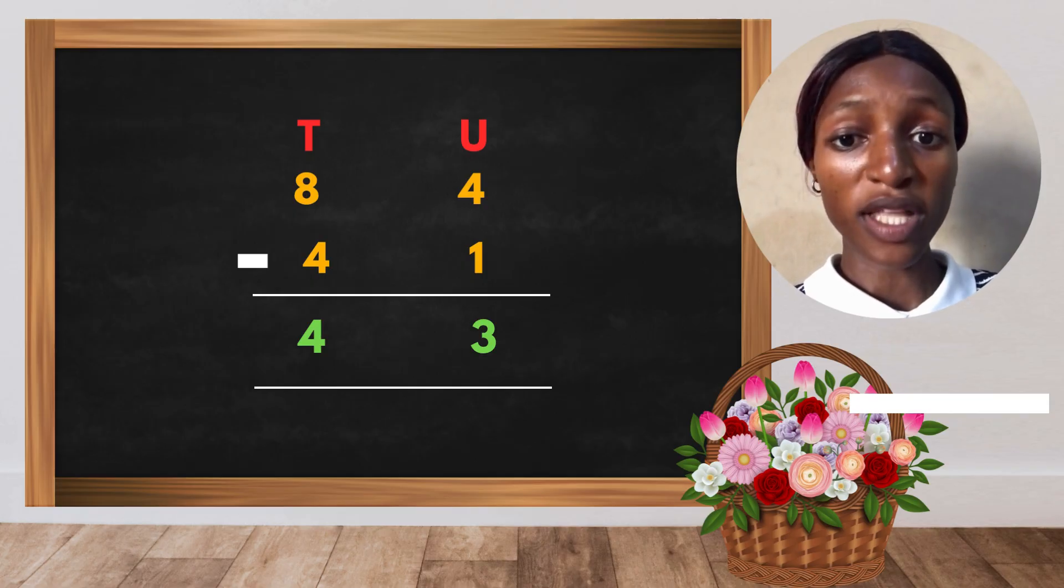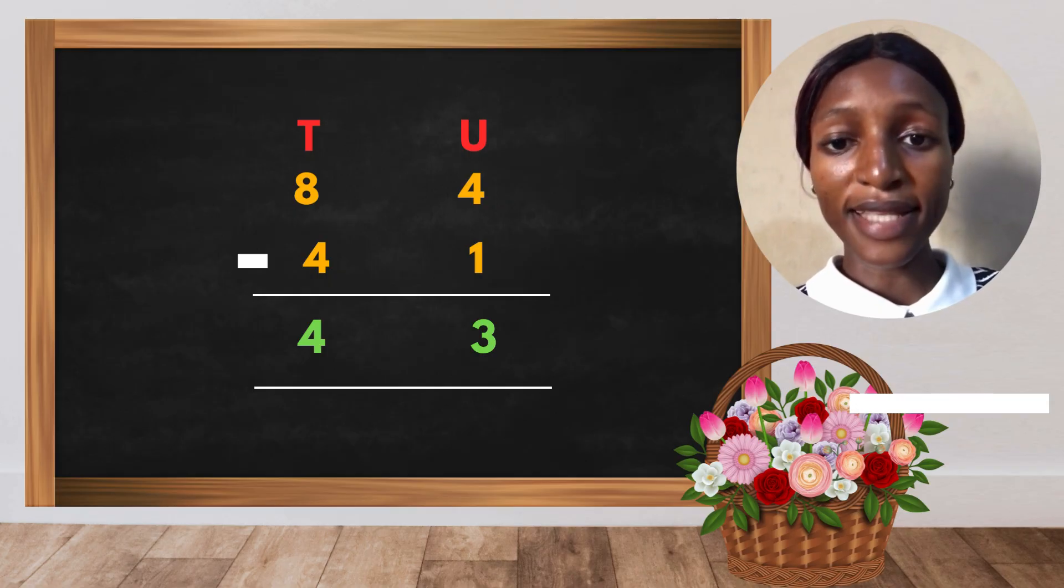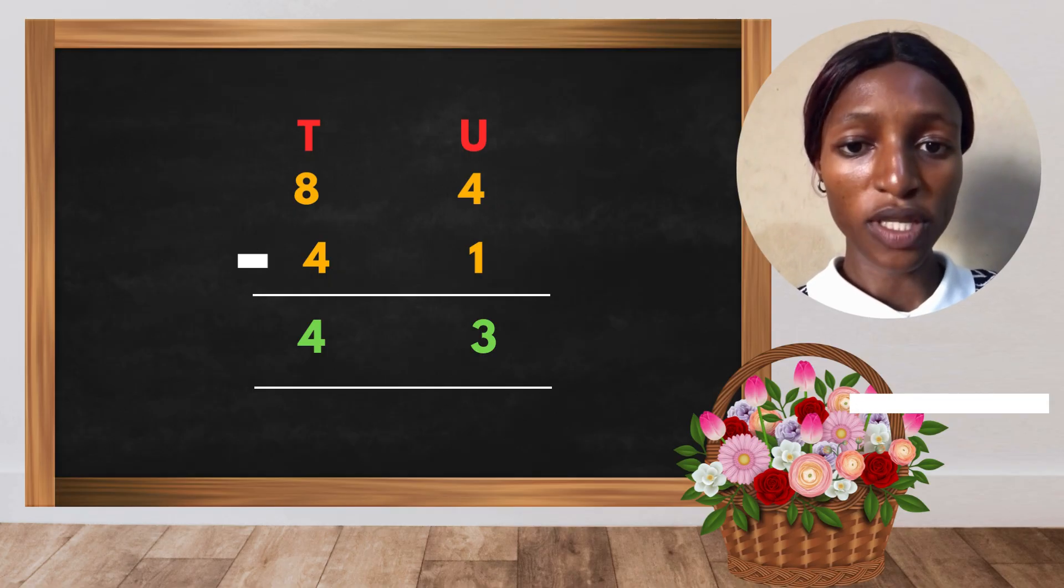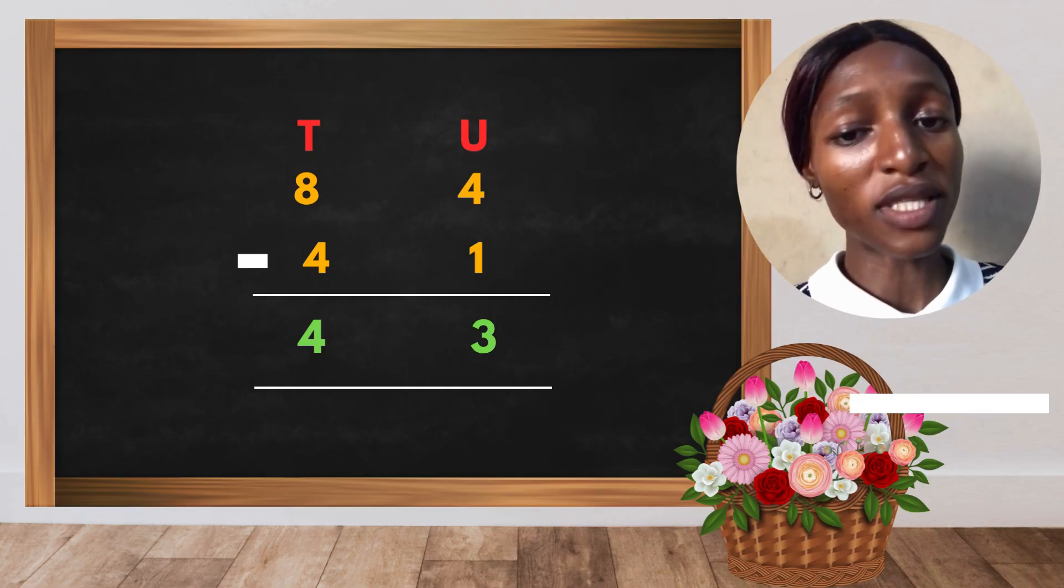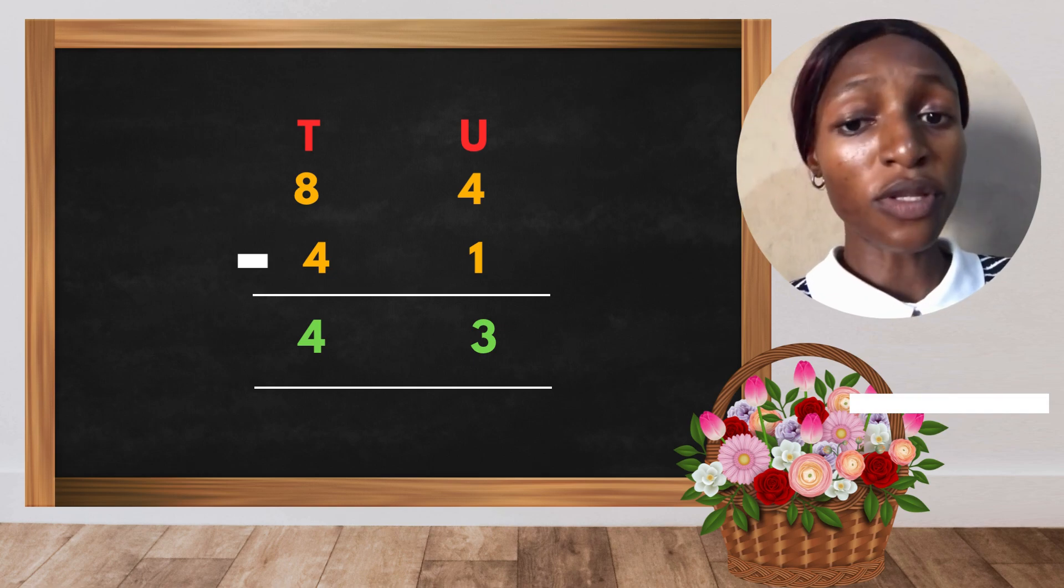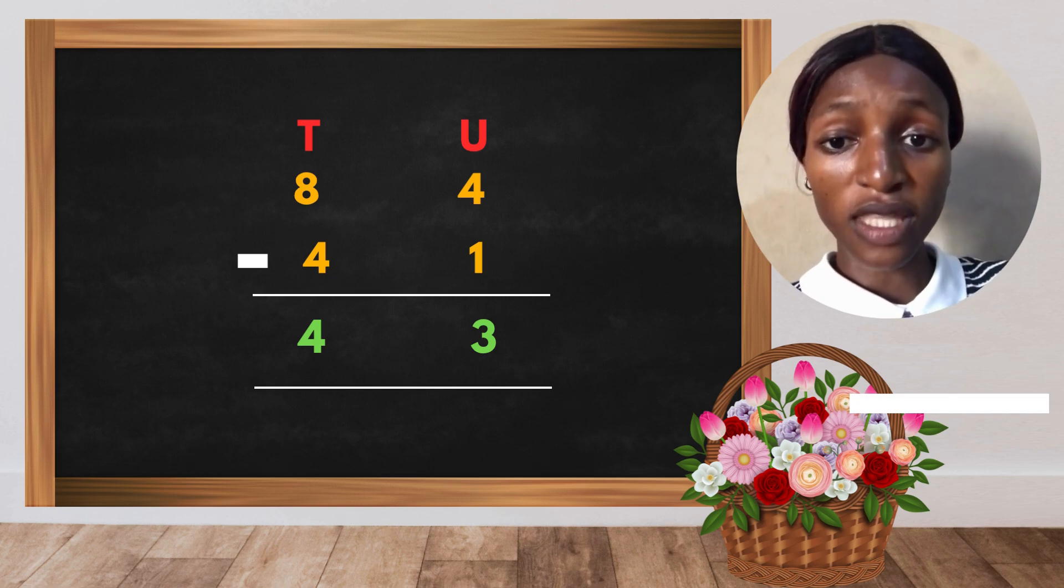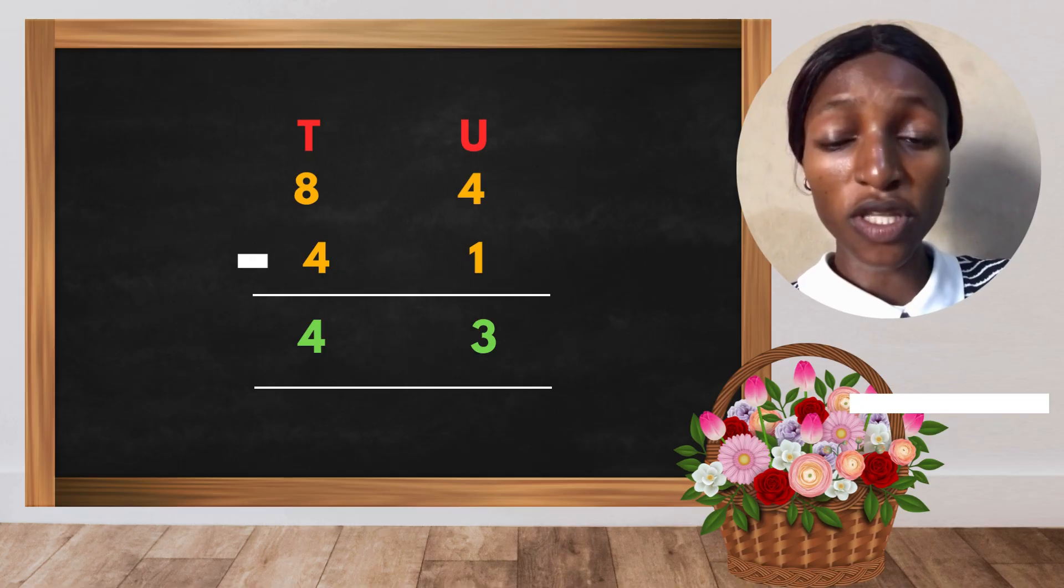So you start your calculation from unit, which is at the back, and then follow the tens. Don't ever make the mistake of starting your calculation from tens. You start your calculation from unit. The symbol for unit is U and the symbol for tens is T.